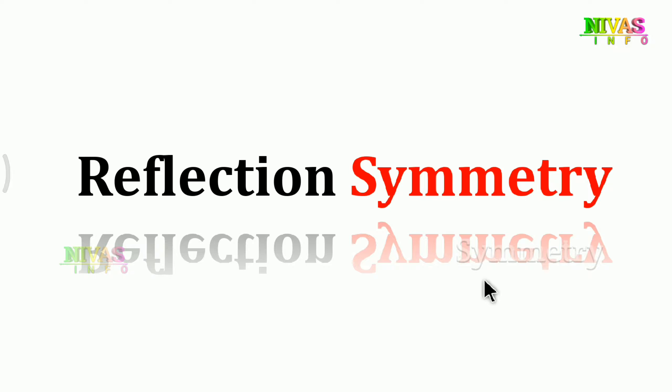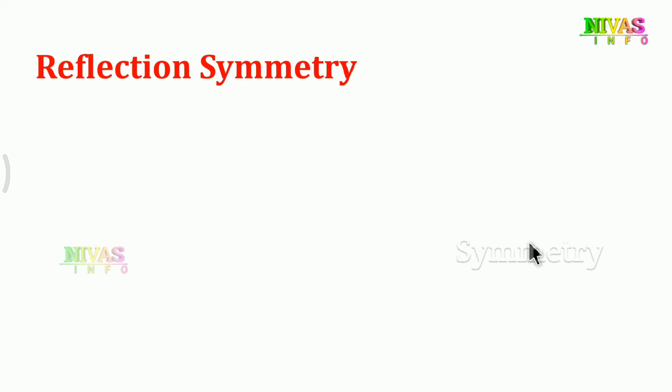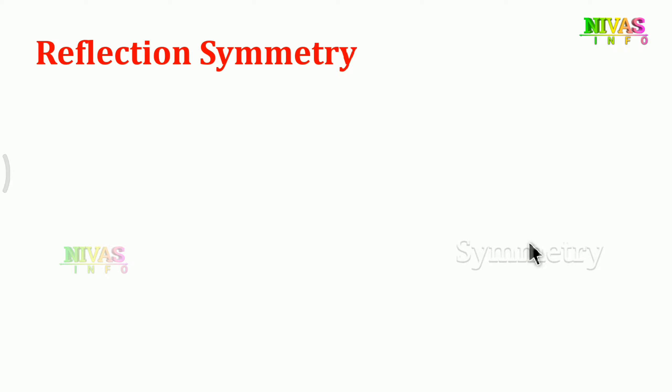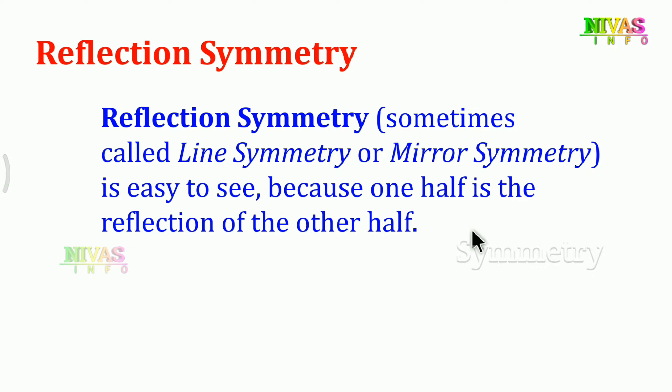Hello everybody, welcome to Universe Info. Today's topic is reflection symmetry. Reflection symmetry is also called line symmetry or mirror symmetry - it is just the reflection. This is one of the easiest types of symmetry.